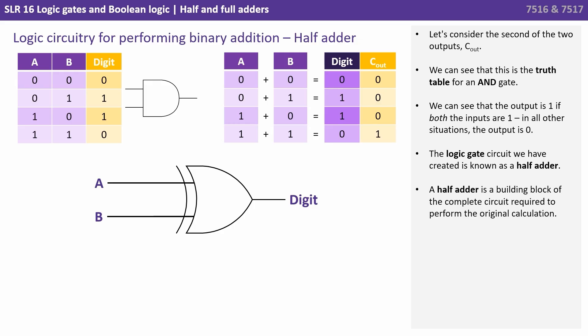The logic gate circuit we've created is known as a half adder. A half adder is a building block of the complete circuit required to perform our original calculation.